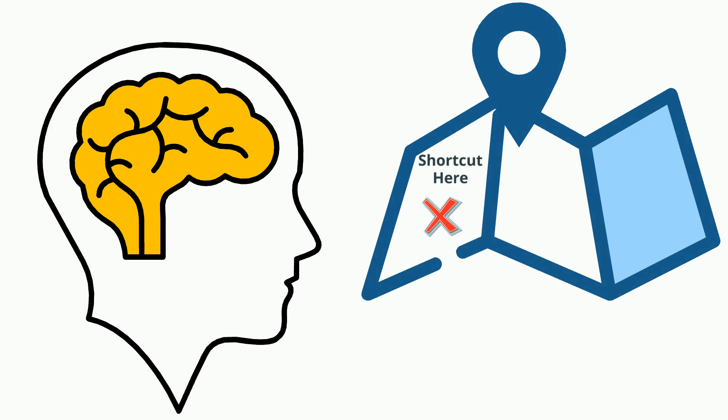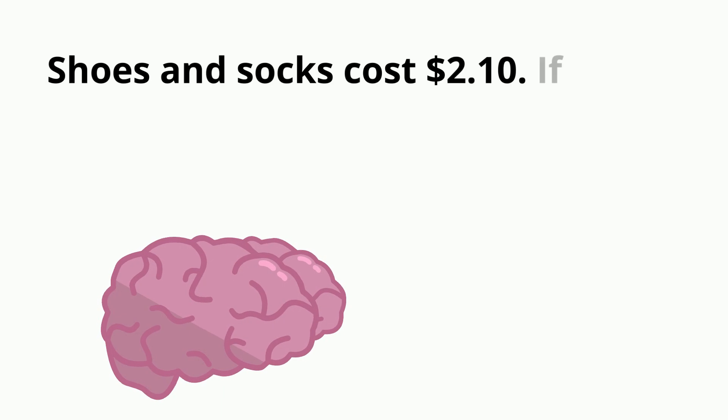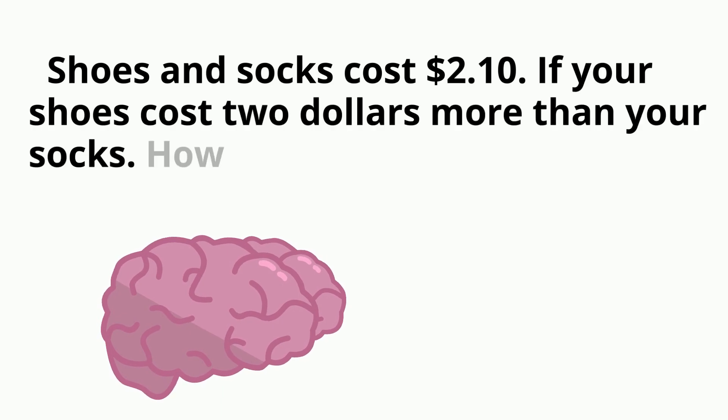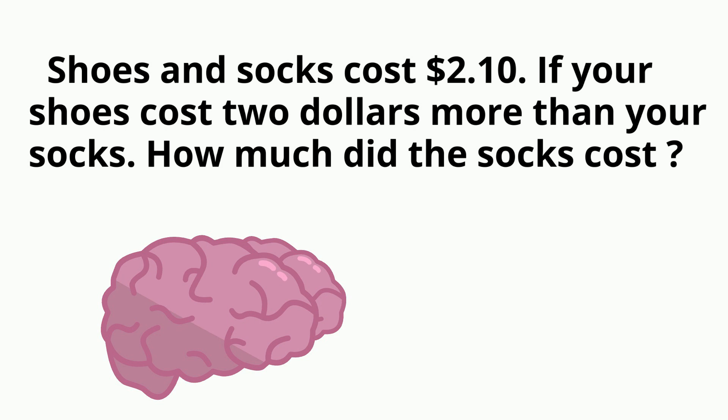Be mindful your brain likes to jump to conclusions. Your brain in fast thinking will also try shortcuts when it can. For example, this word problem. Shoes and socks cost $2.10, but if your shoes cost $2 more than your socks, how much did the socks cost?